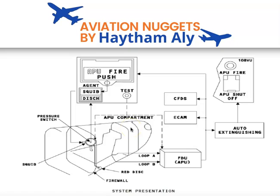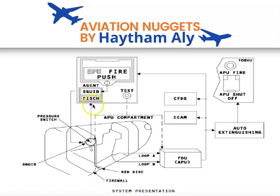To summarize the fire procedure for the APU, remember these two words: isolation, then fire extinguish. You need to isolate any source or anything that may propagate the fire — isolation, done by releasing the fire pushbutton — then fire extinguish.